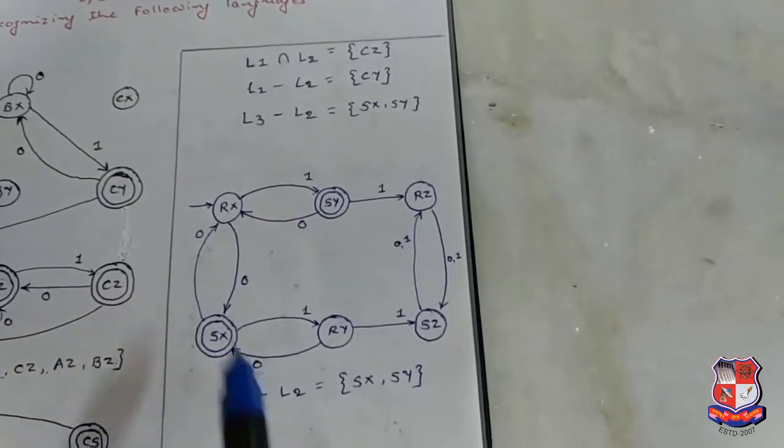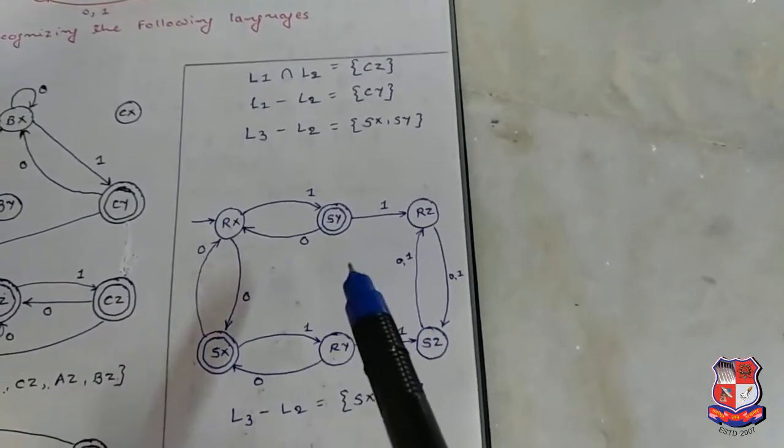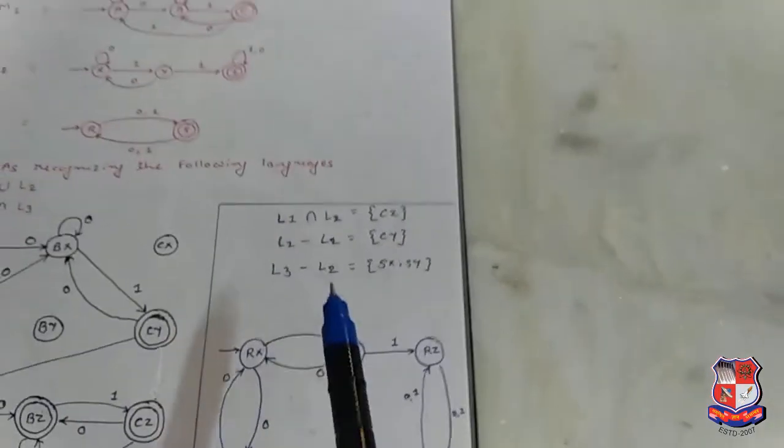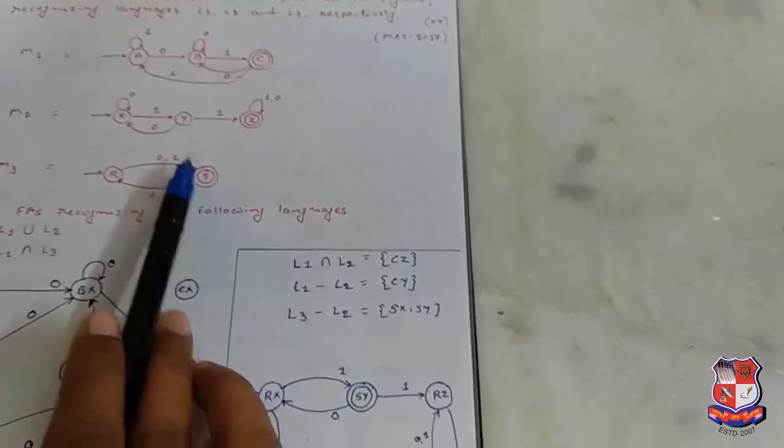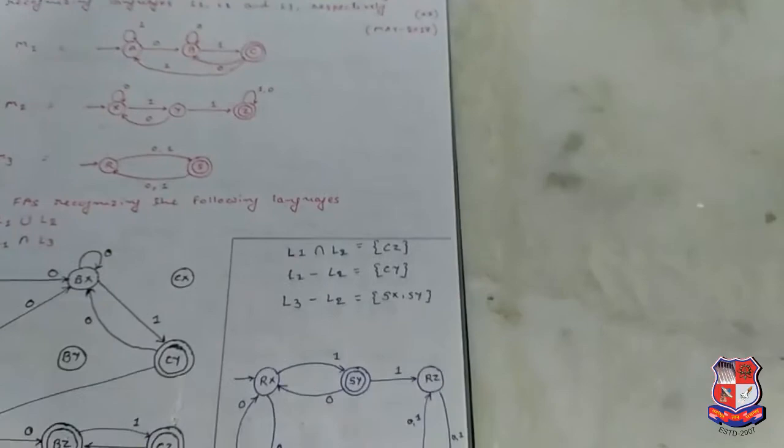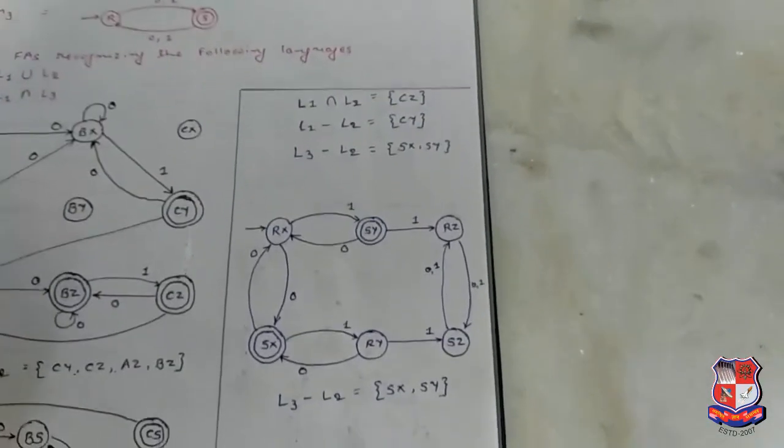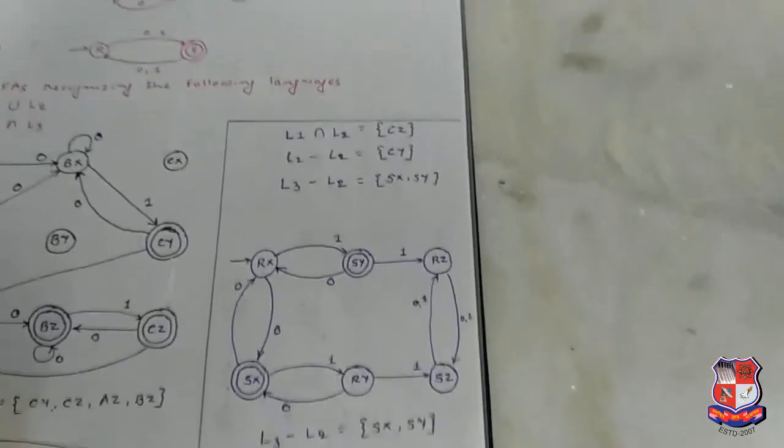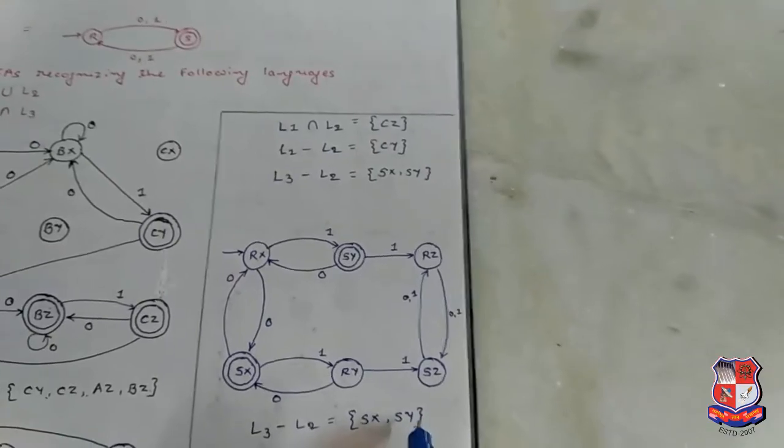Draw all possible states and transition functions. For L3 minus L2, in L3 final state is S and in L2 final state is Z. So all possible states in which S comes but not Z are S X and S Y.